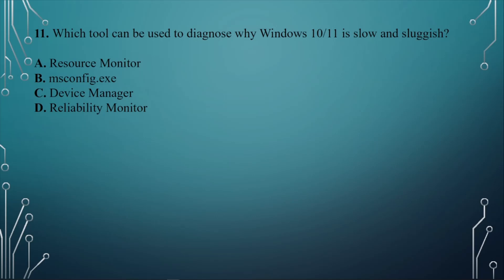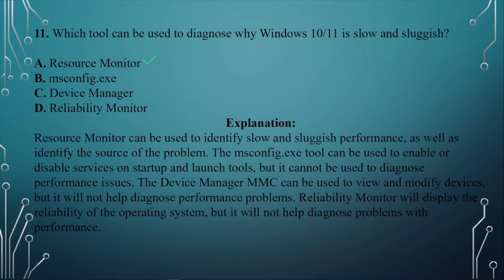Question eleven: Which tool can be used to diagnose why Windows 10/11 is slow and sluggish? A. Resource Monitor. B. msconfig.exe. C. Device Manager. D. Reliability Monitor. The answer is A, Resource Monitor. Resource Monitor can be used to identify slow and sluggish performance as well as identify the source of a problem. msconfig.exe can enable or disable services on startup and launch tools, but cannot diagnose performance issues. Device Manager can view and modify devices but will not help diagnose performance problems. Reliability Monitor displays OS reliability but will not help diagnose problems.